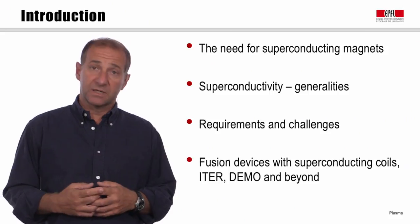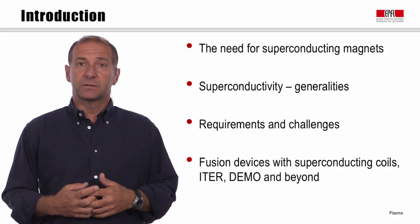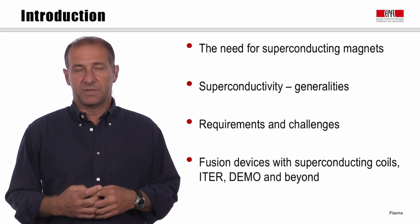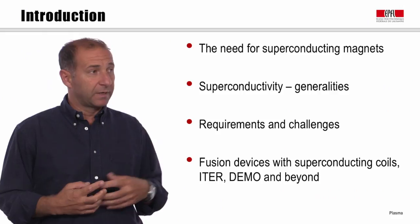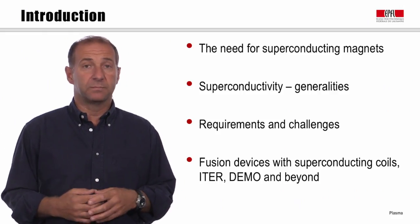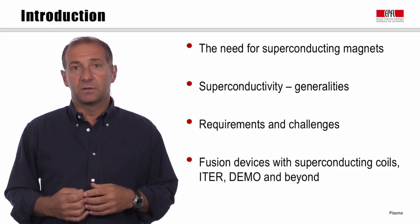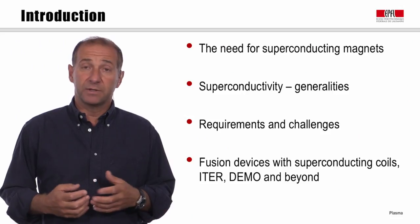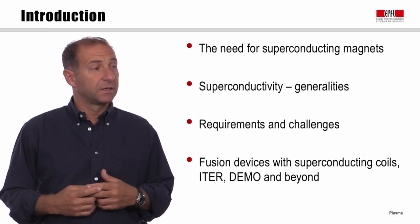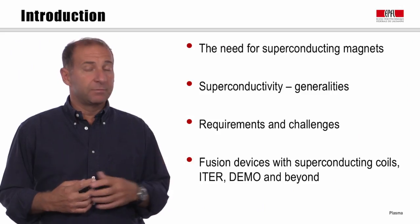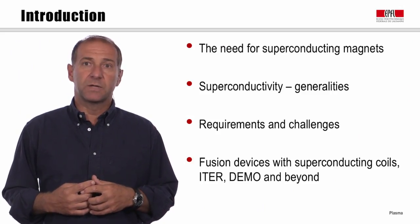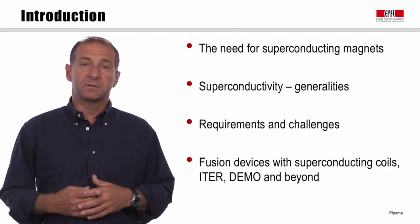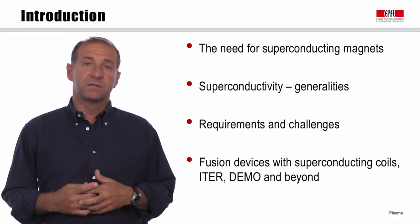This is not a topic of plasma physics itself, but it is a main enabling technology for fusion energy — one of the main applications of plasma physics. We'll look at the need for superconducting magnets for magnetic fusion, some general points on superconductivity, the requirements and challenges that employing superconductors for fusion imply, and examples of fusion devices that use superconducting coils today, and more importantly ITER, DEMO, and the steps beyond — the final fusion reactor.